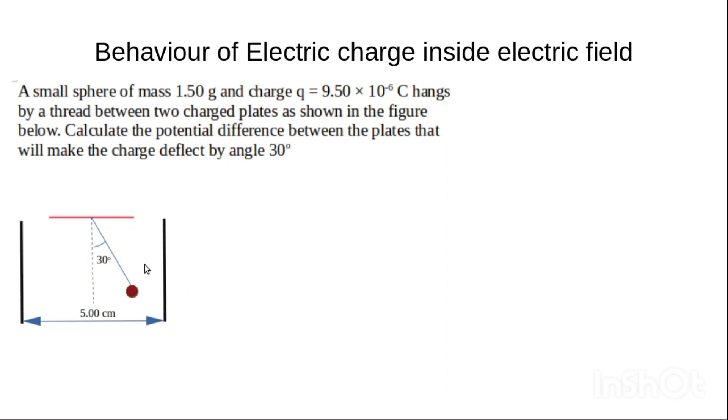To solve this particular problem, we are to find the potential difference between these plates for this particular charge to be suspended at an angle of 30 degrees. We have to look at the free body diagram for the system.